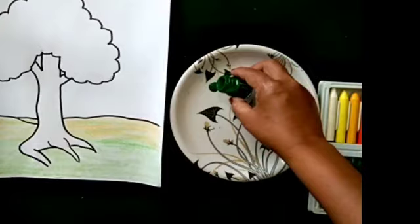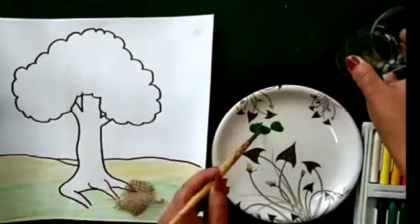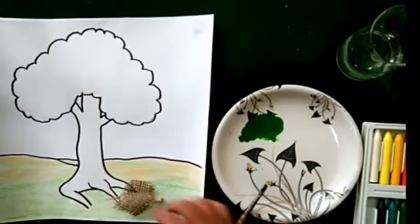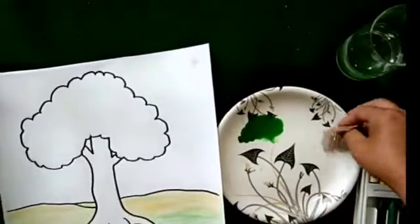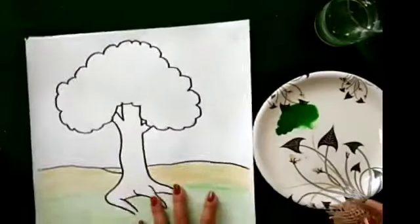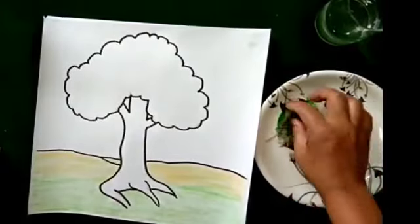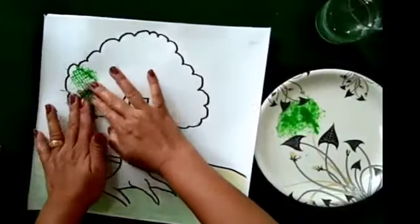After that, pour poster colors on a plate and mix it with little amount of water. Then dip the jute in the mixture and print the impressions on the tree.